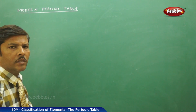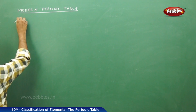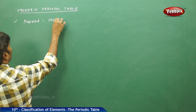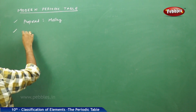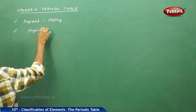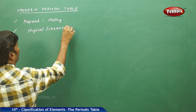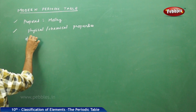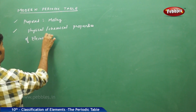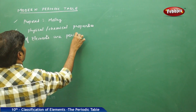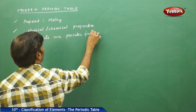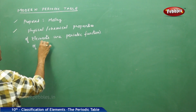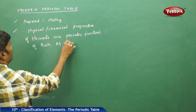The next part of the discussion here is the modern periodic table. This modern periodic table was actually proposed by Mosley. According to Mosley, all the physical and chemical properties of elements are the periodic functions of their atomic numbers.